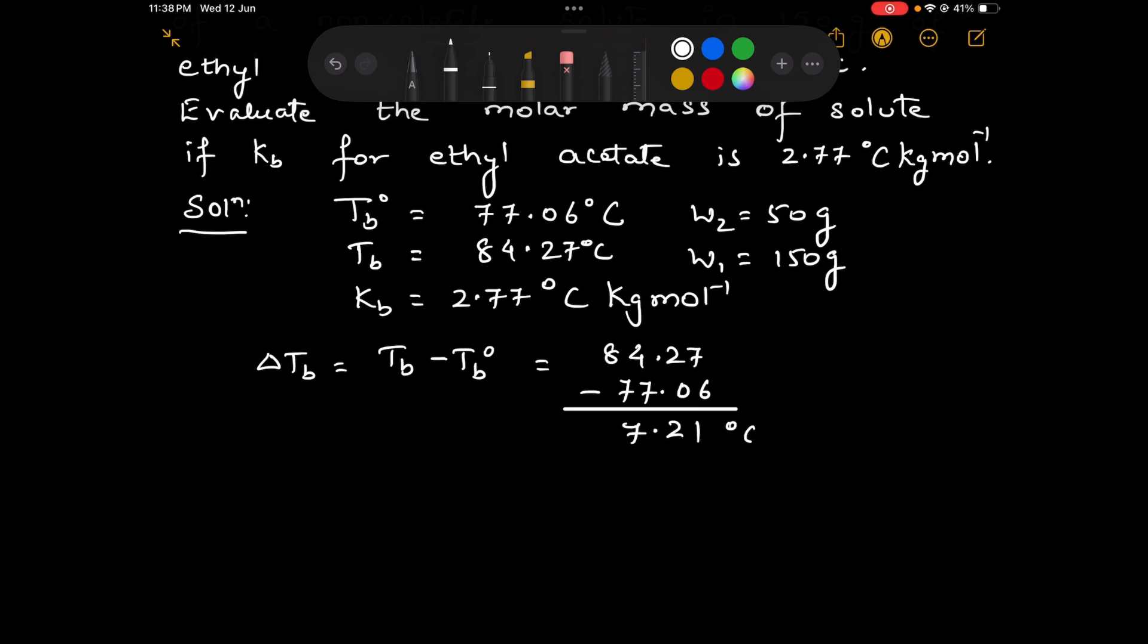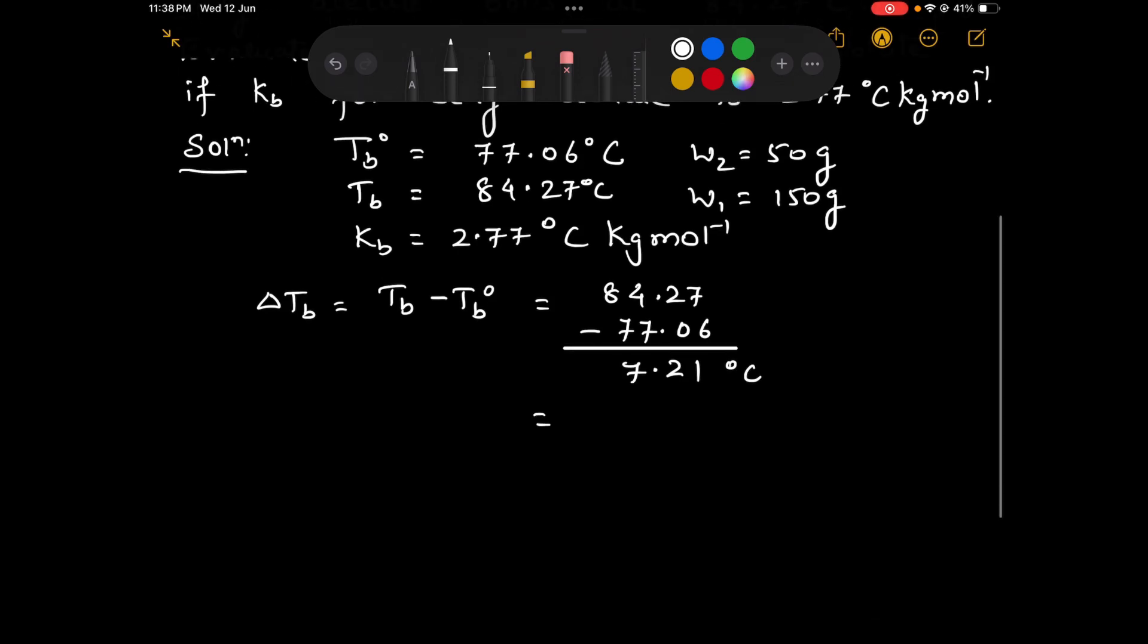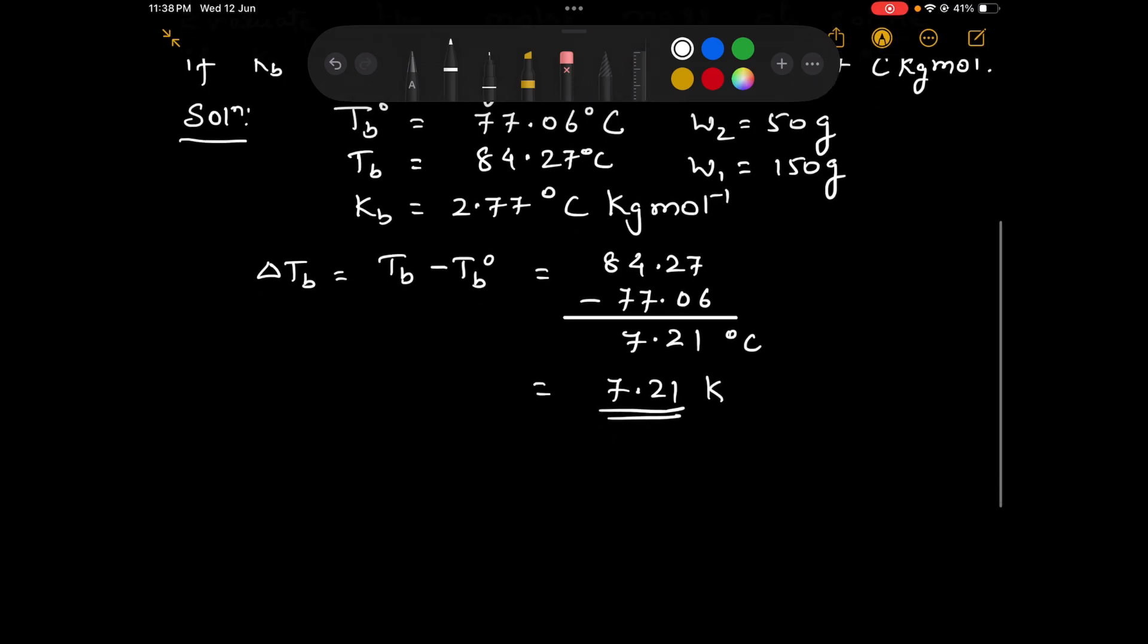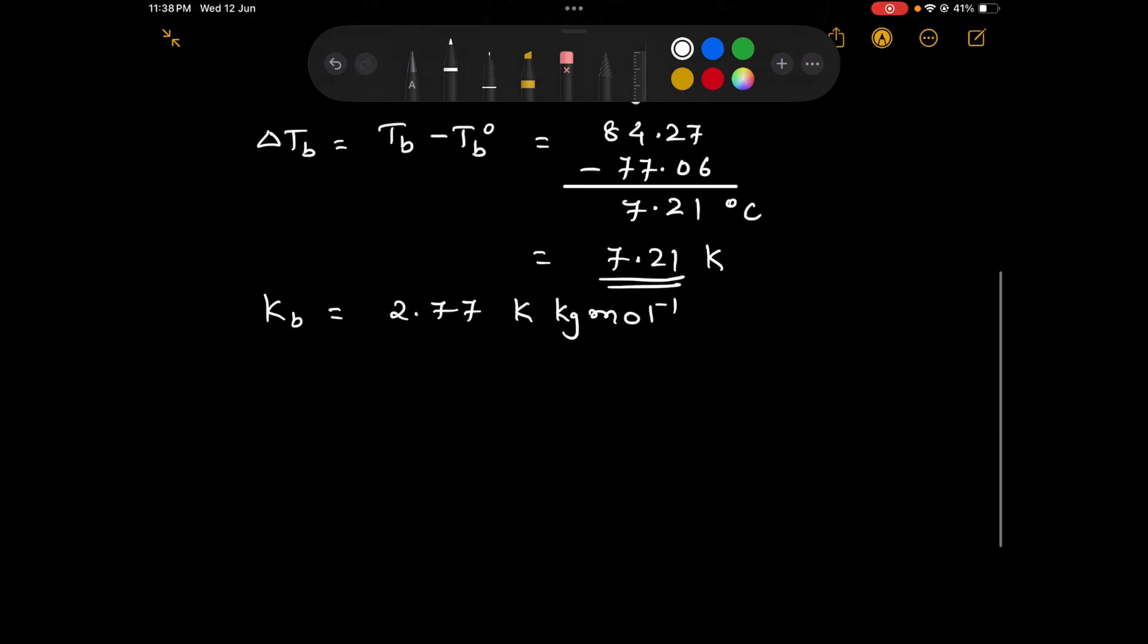So 7.21 degree Celsius, which can be conveniently written as 7.21 Kelvin since it is a difference. Similarly, we can also write KB as 2.77 Kelvin kg mole inverse.